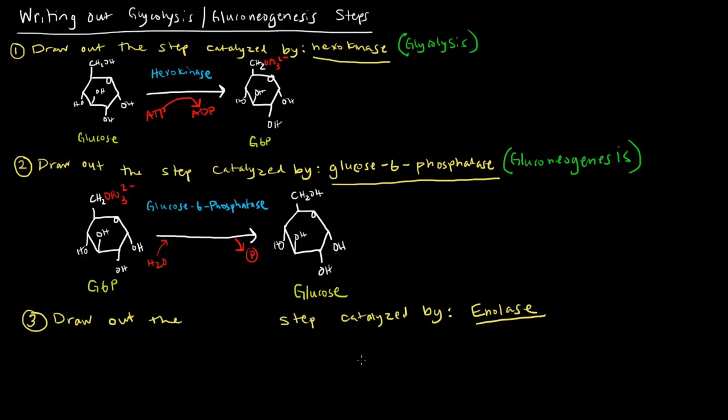But what if I'm told to draw the step catalyzed by enolase? Well, then I get confused, because I know that enolase is one of those enzymes that can catalyze both the forward and the reverse reaction. This is a reversible step.